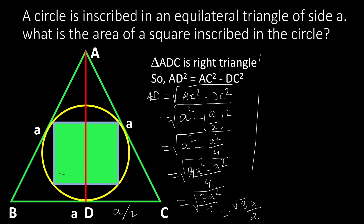Now let us take the centroid of this triangle — this is the centroid. We know that the centroid divides the median in the ratio 2:1. That means OD is one part of AD. So OD equals one-third of AD, and AD equals √3A/2.